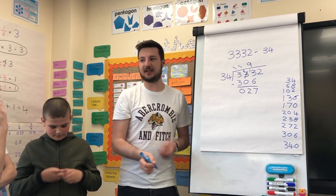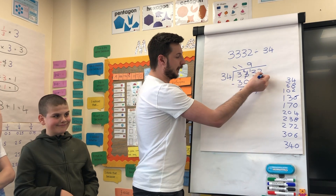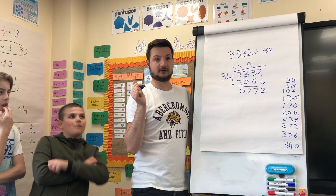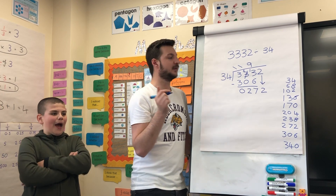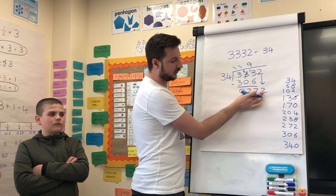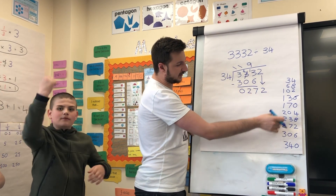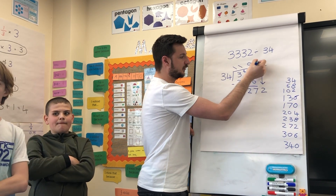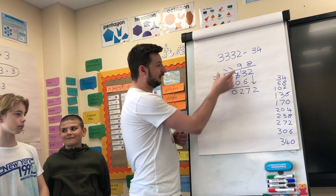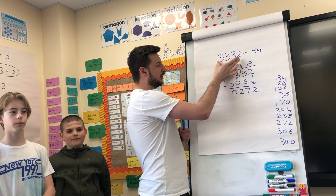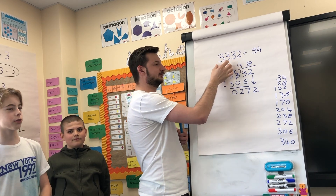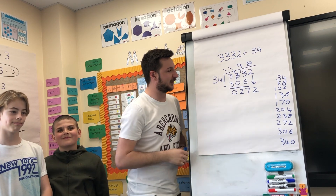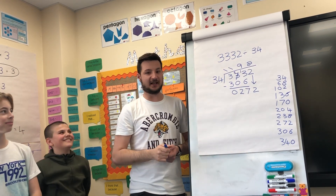The next step is? Bring it on down. Bring down the two. And then? Bring it on back — we're going to do the same again. Thirty-four into two hundred and seventy-two goes in exactly eight times. So the answer to three thousand three hundred and thirty-two divided by thirty-four is ninety-eight.